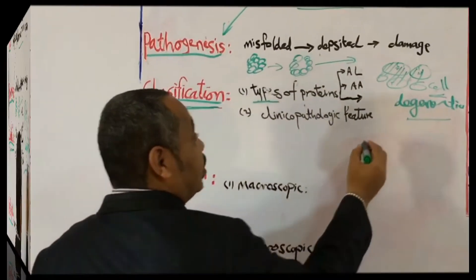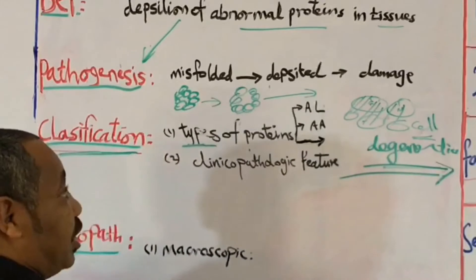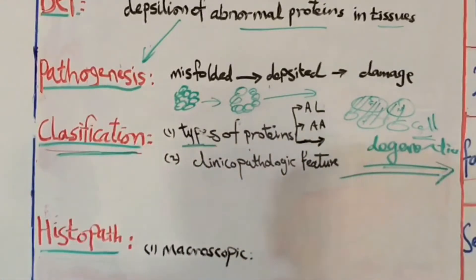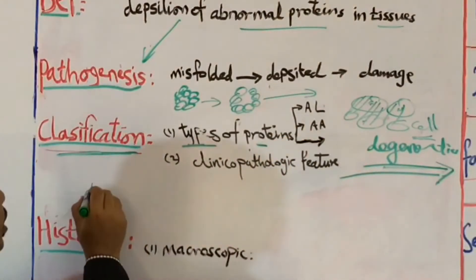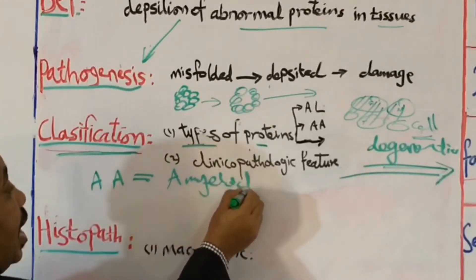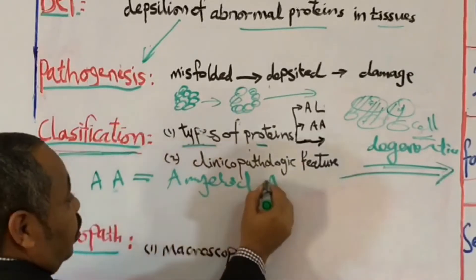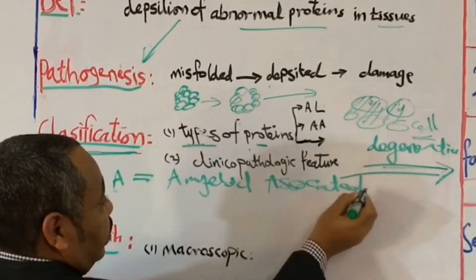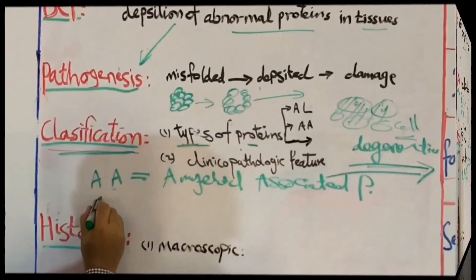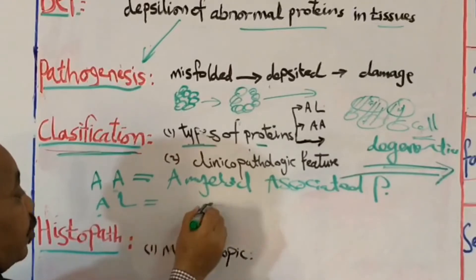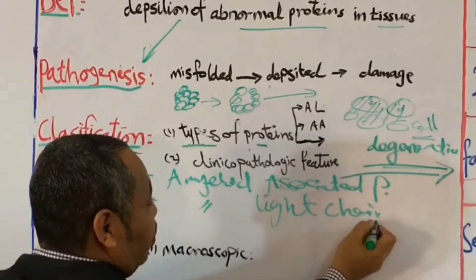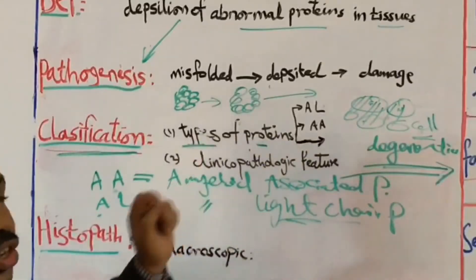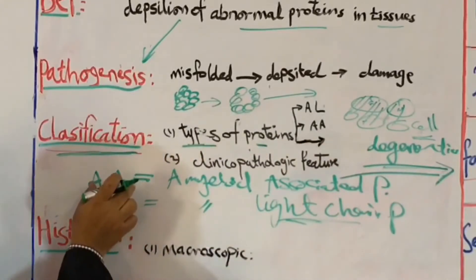And this table will help us a lot in understanding the classification point here of this amyloidosis. And actually this is very important because we have a lot of types of protein which are deposited. For example, the first one is called AA, which means A here for amyloid associated protein. And the second one is called AL, A here is also for amyloid light chain protein. So this protein comes from the light chain of immunoglobulin. So this is immunoglobulin, but this is not immunoglobulin.